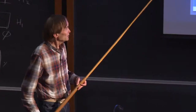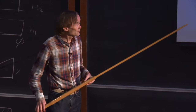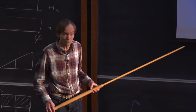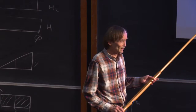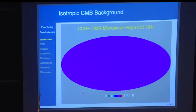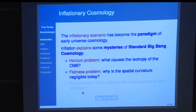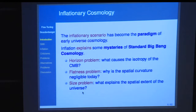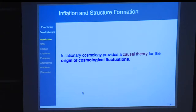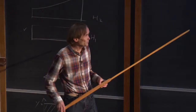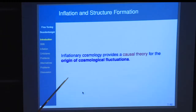For example, inflation explains the fact that in all directions in the sky, the microwave background temperatures are the same. This is a projection of the sky onto a plane showing different temperatures — the isotropy. This is the horizon problem. Standard Big Bang cosmology does not explain why the universe is spatially flat to the extent that we can measure, nor why the universe is so much bigger than the Planck size. These are three mysteries which inflation explains.